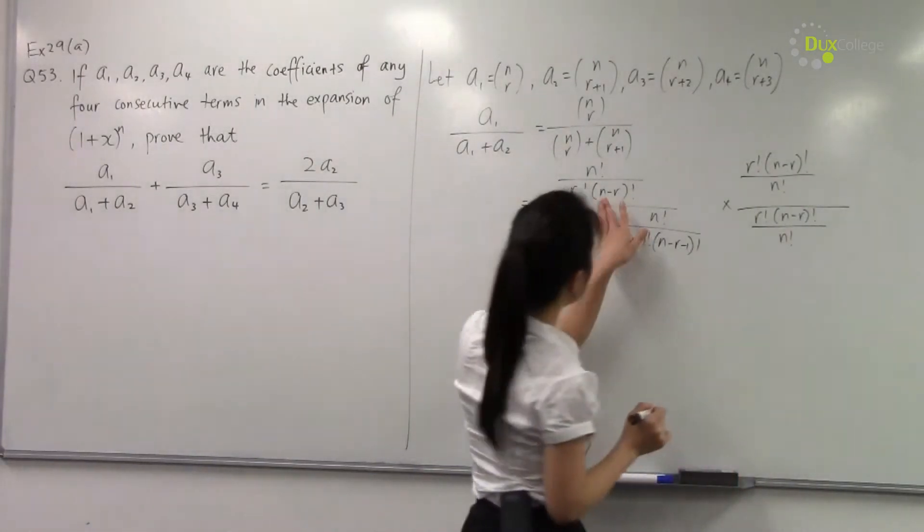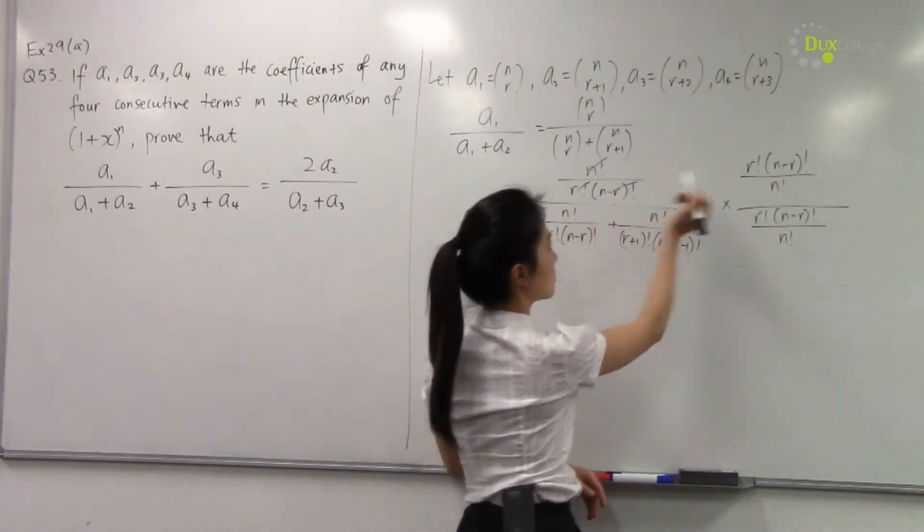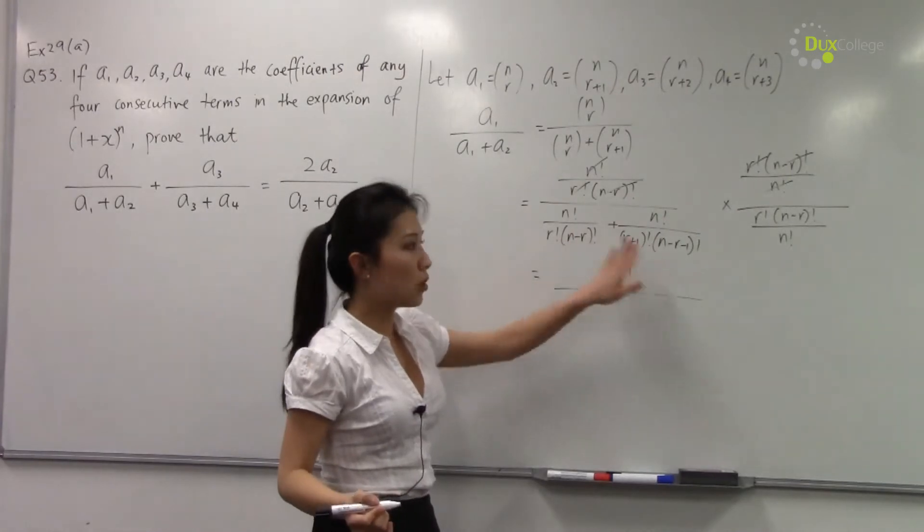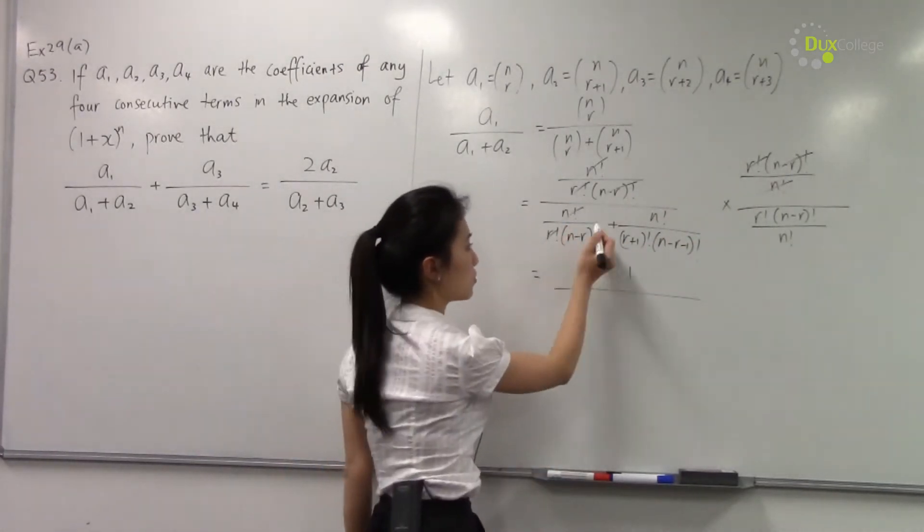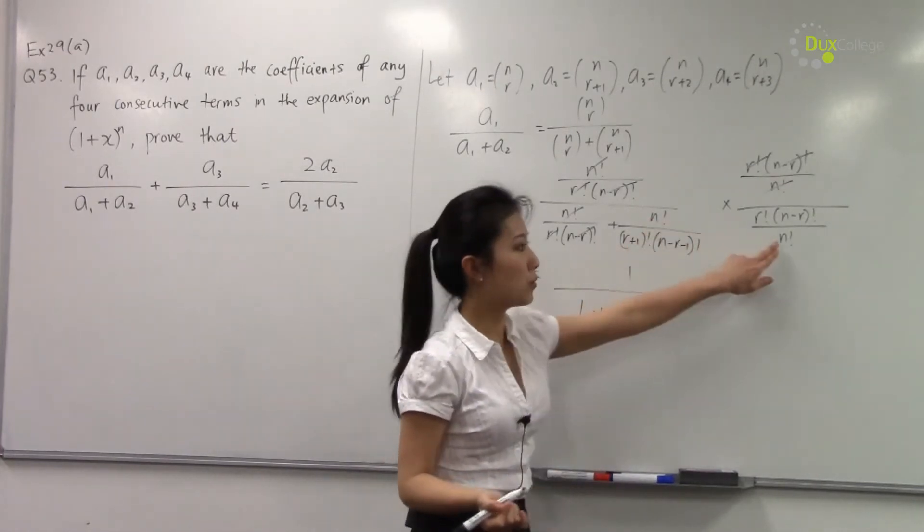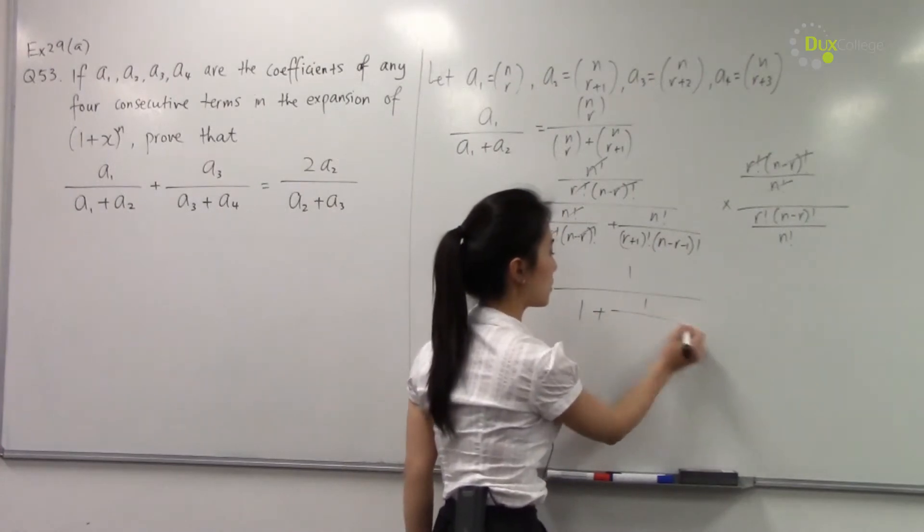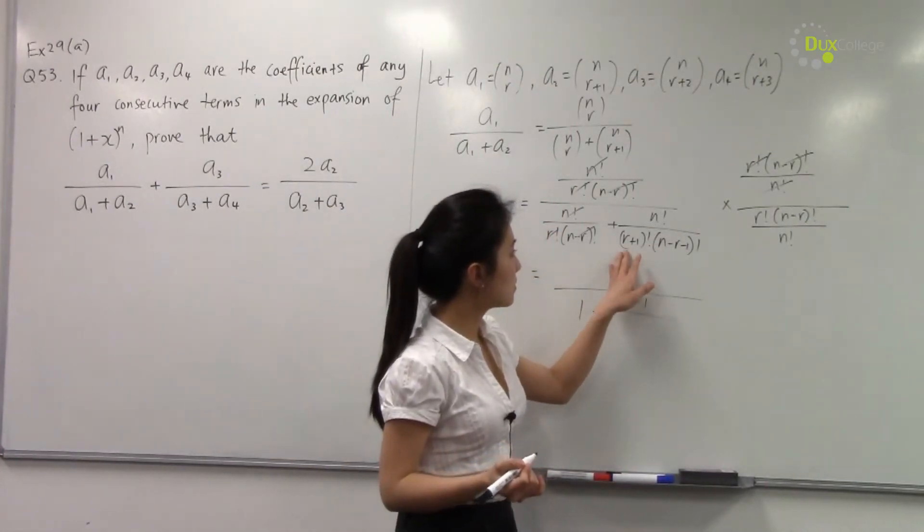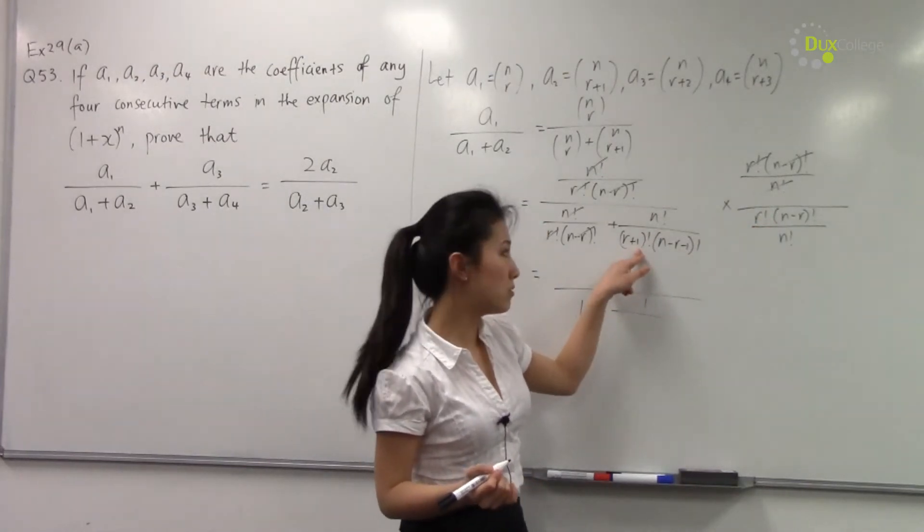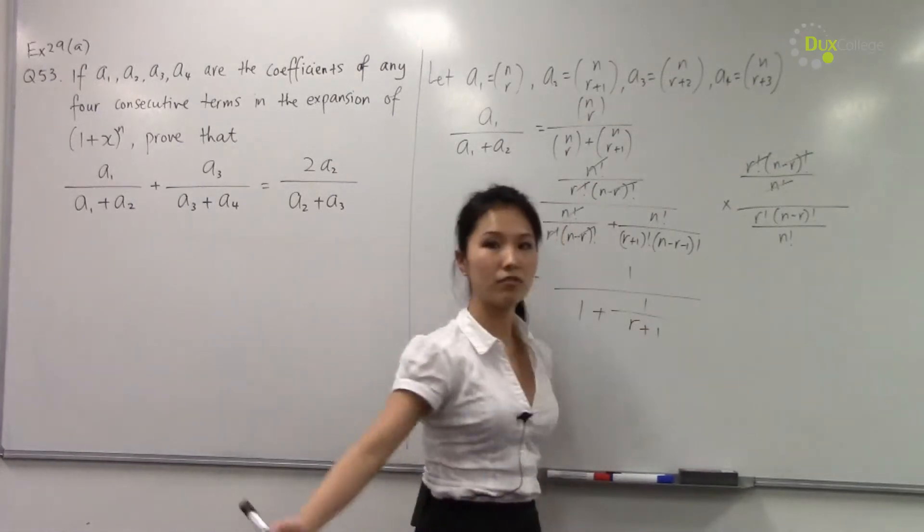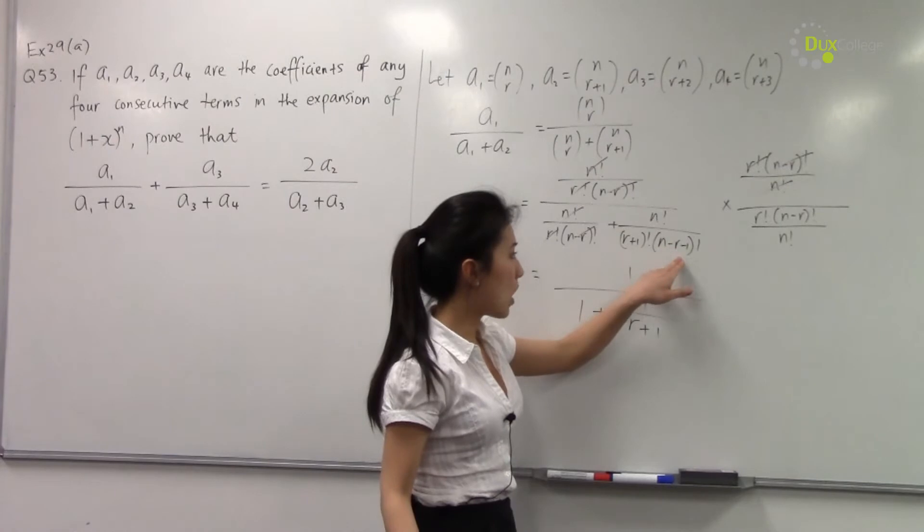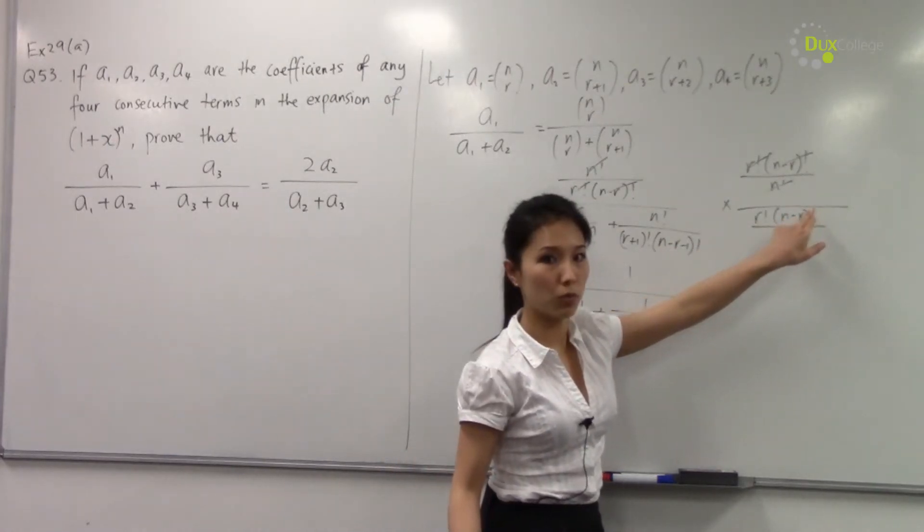Now you can see that multiplying the top by this, they all cancel out, leaving you with 1. Multiply the denominator by this, you can see that this cancels out as well, leaving you with 1. And n factorial cancels out with n factorial. And we have r factorial divided by (r+1) factorial, which means you have just r+1 left on the numerator. And when you cancel out (n-r-1) with (n-r) factorial on the numerator.